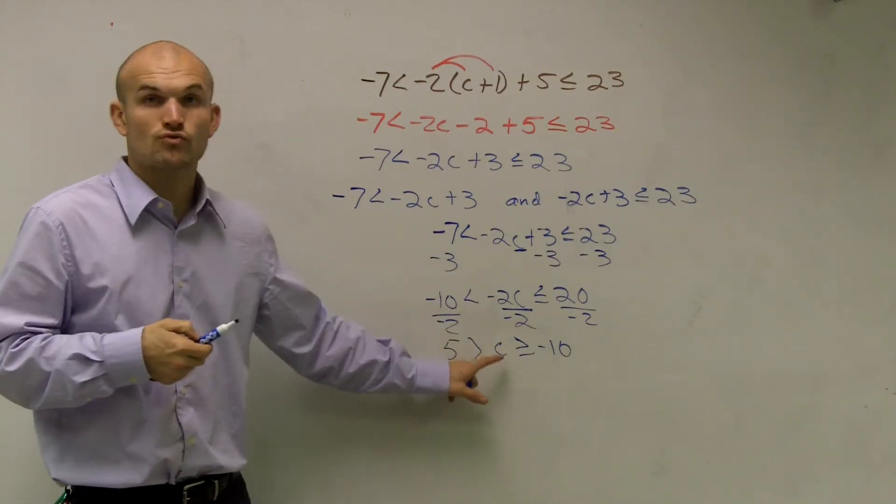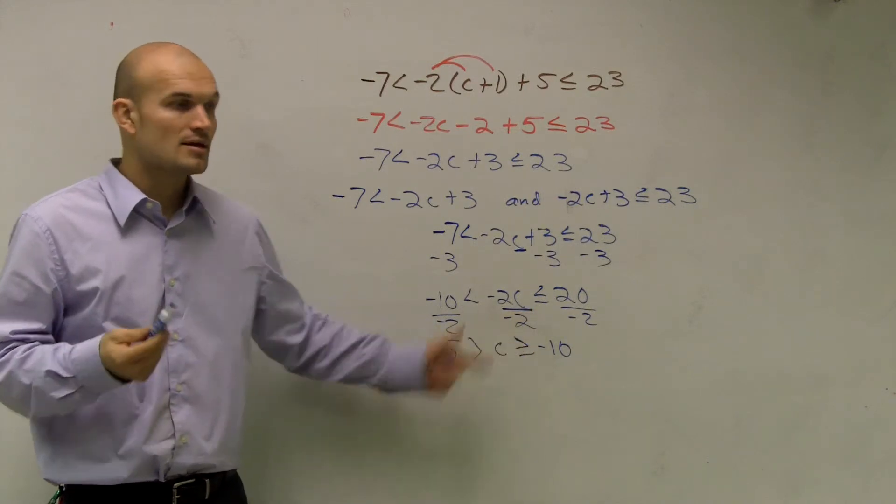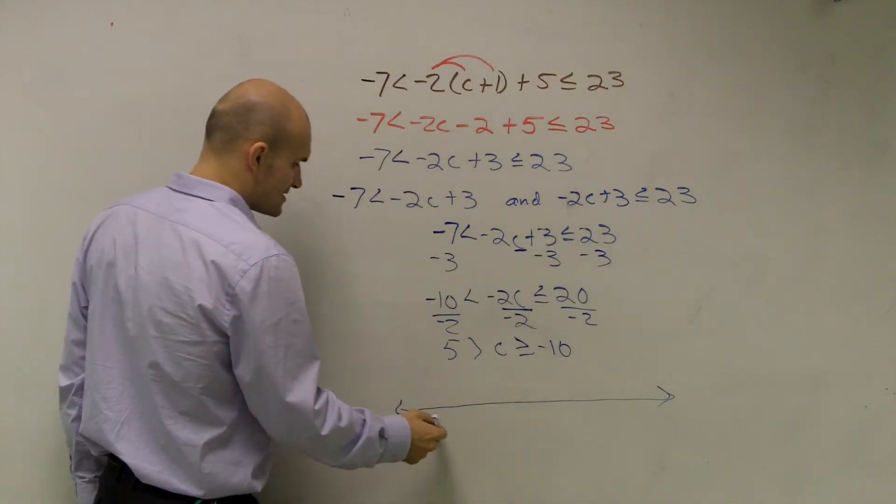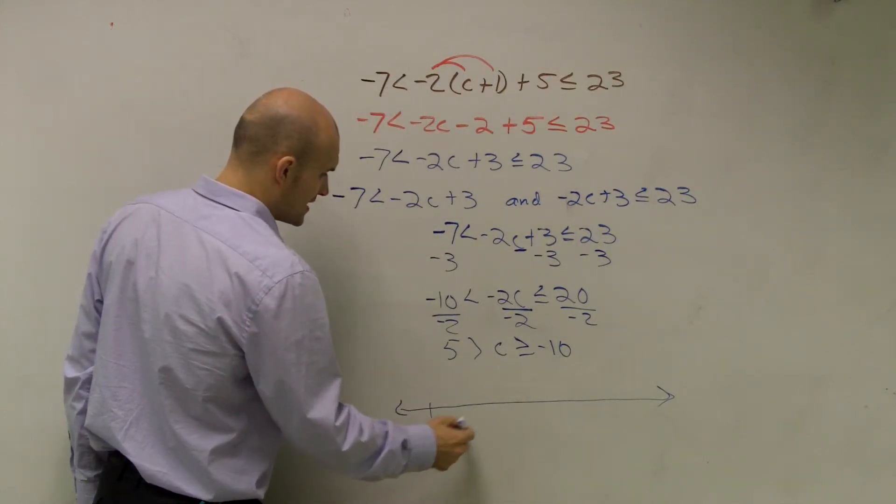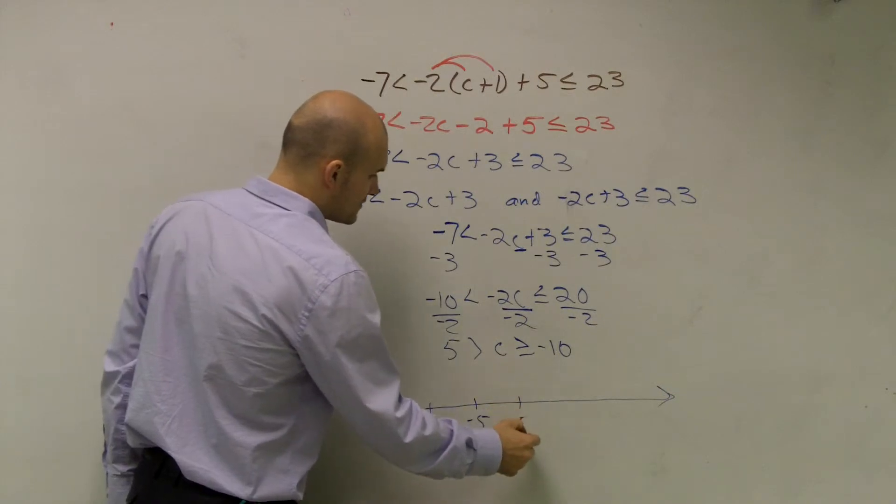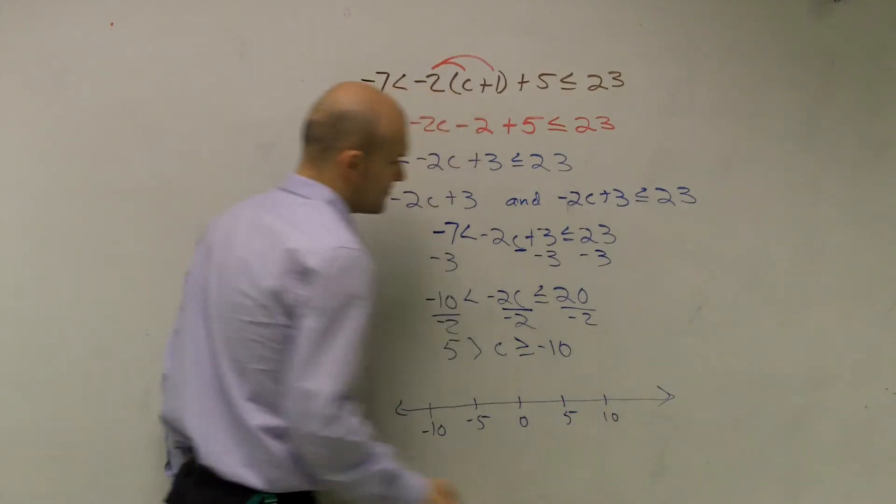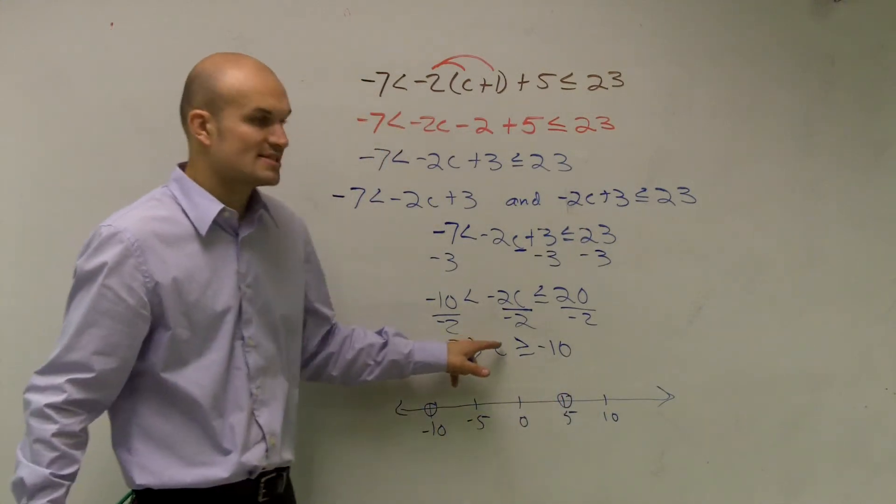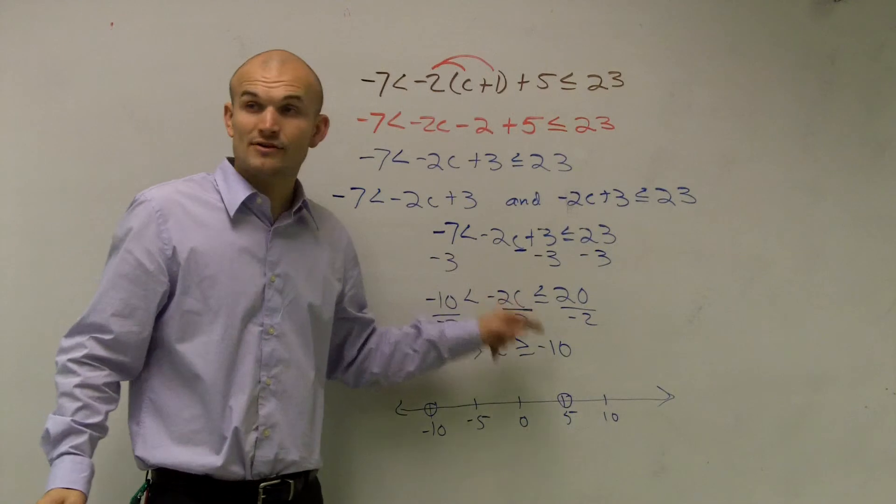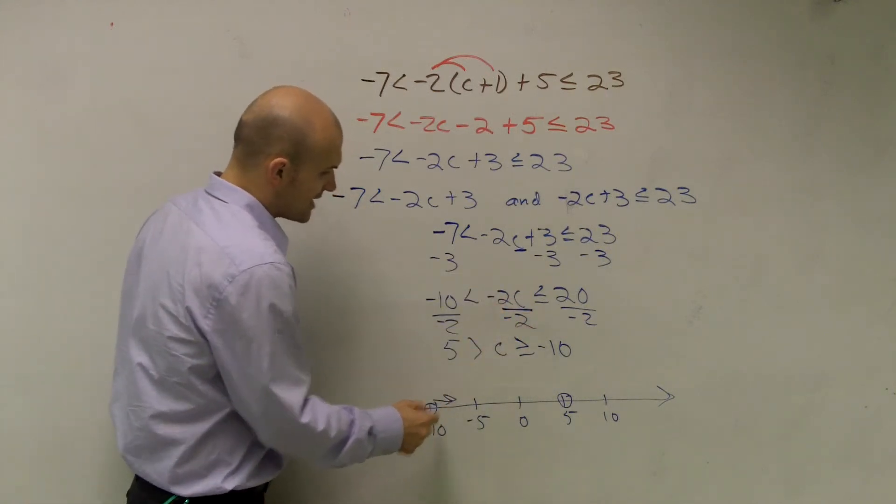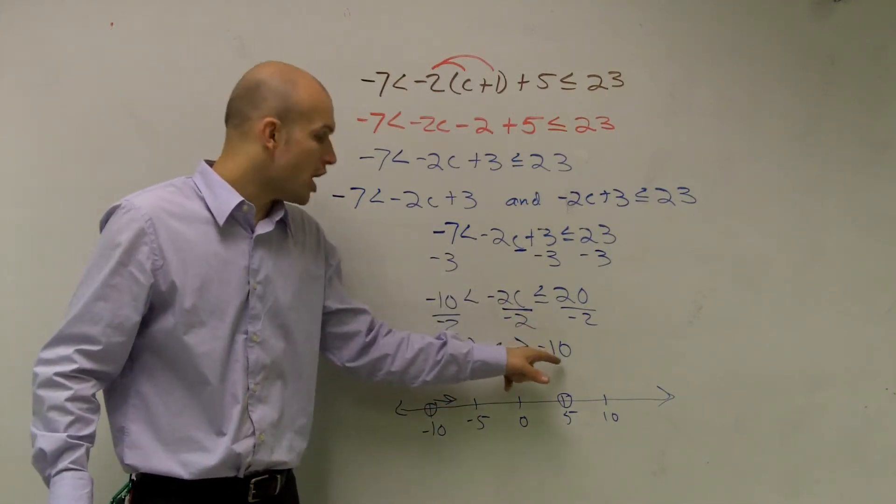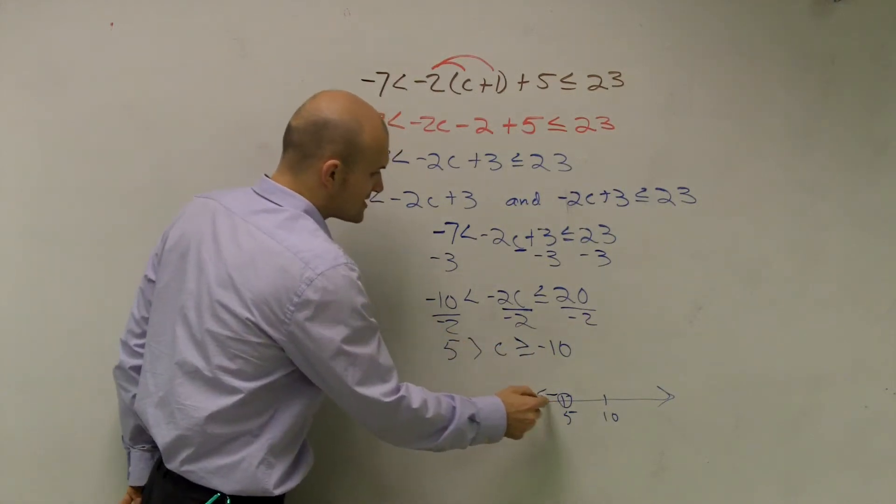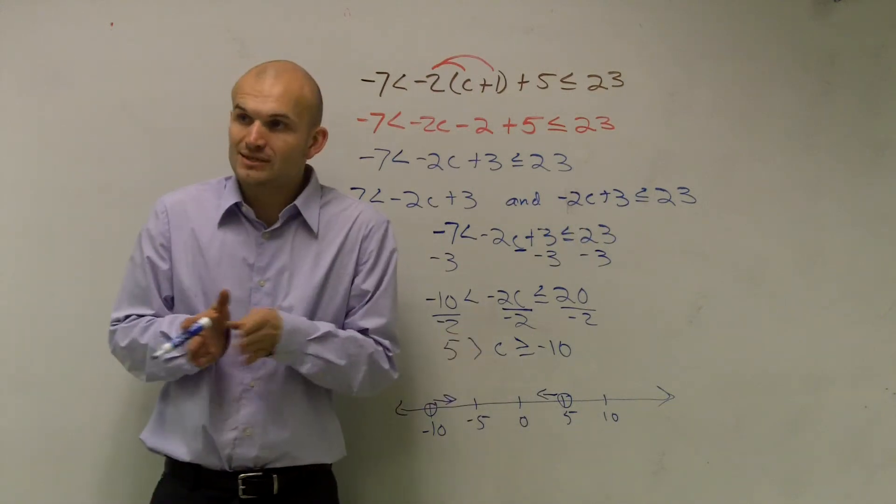So if I was going to draw a number line, let's see, let's do negative 10, negative 5, 0, 5, 10. I make a dot at 5 and negative 10. And it says, c, all numbers have to be greater than negative 10. So that means I'm going to draw a line going to negative 10. But then also, the numbers have to be smaller than 5. So it's all numbers going less than 5.